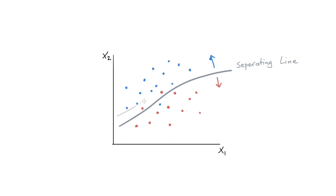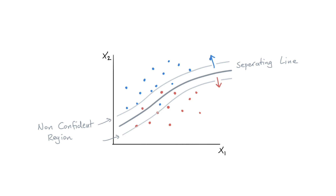Because maybe we can figure out some sort of a boundary around our separating line. The region I've drawn here — maybe I can say this is my non-confident region. The further away we are from the separating line, the more sure we might be that we are indeed in the blue region. And the further I am from the separating line on the other end, the more certain I can be that I'm in the red region. But there is this area in the middle where the odds of overlap might just be a little bit too big.